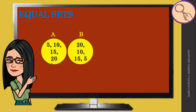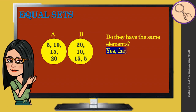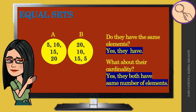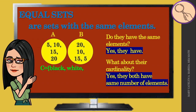Going back to our example, set A has 5, 10, 15, 20, and set B has 20, 10, 15, 5. They have the same elements and the same cardinality. Equal sets are sets with the same elements. And since they have the same elements, they are also equivalent. For example, set C with black, white, brown and set D with white, brown, black have the same elements and therefore the same cardinality.